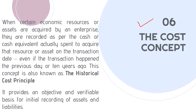Another concept is the cost concept, also known as the historical cost principle. This means that when a business entity acquires assets, those assets will be recorded in the financial statements at their original cost. Whether the transaction occurred last year or ten years ago, it will be recorded at cost. For example, if a building was bought ten years ago for rupees 1.5 lakh, it will still be shown at 1.5 lakh in the financial statements, even though its market value may have appreciated over time.